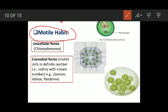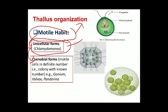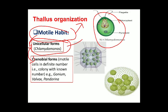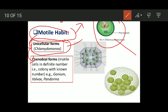The first type of habit we are going to talk about is motile habit. Under this category we have first the unicellular forms, then coenobial forms. Motile habit means all those algae which are motile — able to move because of the presence of some locomotory organs like flagella. The best example of unicellular motile algae is Chlamydomonas; it possesses two flagella.